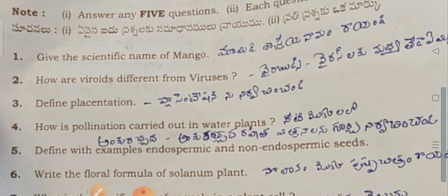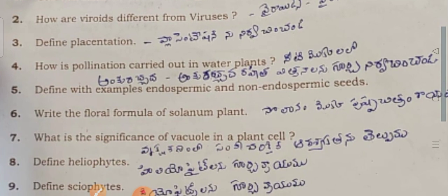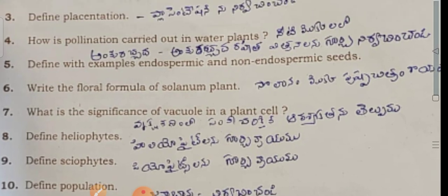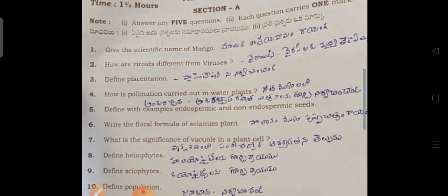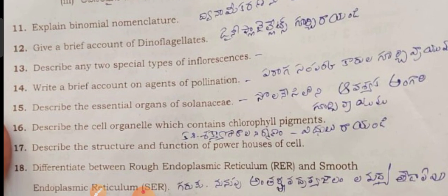This will give the scientific name of mango. Harvest — it's different from viruses. Different placentation. How is pollination carried out in water plants? Different examples of endospermic and non-endospermic seeds. What is the floral formula of Solanum plant? Scientific significance of leaf modifications in plants. Heliophytes, sciophytes, and population ecology.